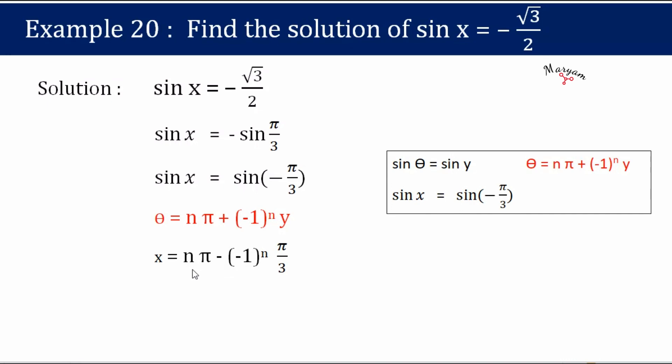So this is the general solution in which we have the n terms. In your textbook you may find a different value, you may find 4 pi by 3, but the values will remain the same. The value of minus pi by 3 and plus 4 pi by 3 which is given in your textbook has the same value of minus root 3 by 2. So it is no different.